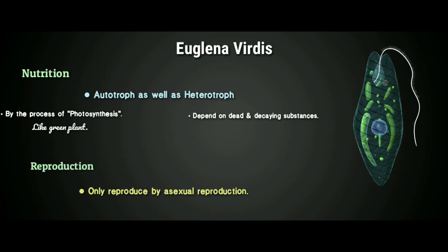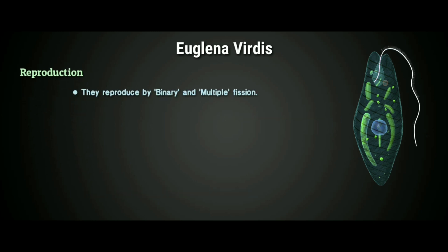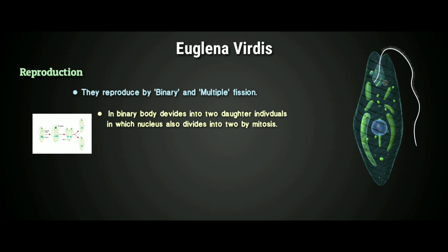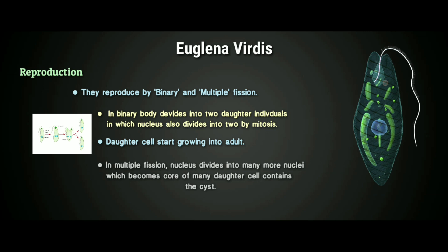Reproduction: Euglena reproduces only by asexual reproduction and there is no evidence of sexual reproduction. In asexual reproduction, they reproduce by binary and multiple fission. In binary fission, the body divides into two daughter individuals, in which the nucleus also divides into two by mitosis, and the daughter individuals start growing into adults. In multiple fission, the nucleus divides itself into many nuclei, which become the core of many daughter cells contained within a cyst. As the cyst breaks, the daughter cells escape and grow into adult Euglena.